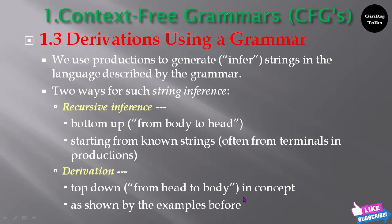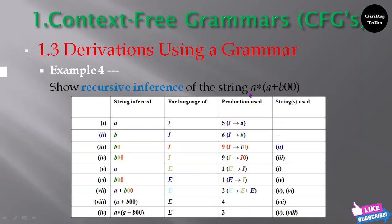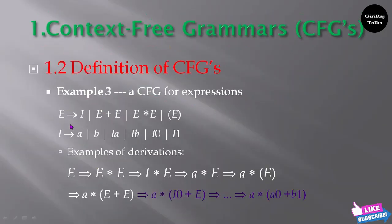You will see in the example recursive inference of the string a star of a plus b 0 0. Using productions, you need to derive this string. Initially you will consider 'a' here, and when you are deriving this string from the productions — these are all the productions shown here.